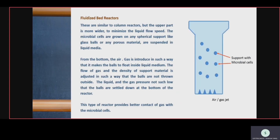Fluidized bed reactor is similar to column reactors but the upper part is wider to minimize liquid flow speed. Microbial cells are grown on spherical supports — like glass balls or porous material — suspended in liquid media. From the bottom, an air jet or gas jet is introduced, causing the balls to move upward. The flow of gas and density are adjusted.